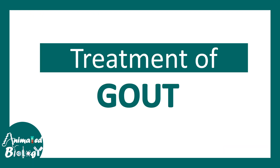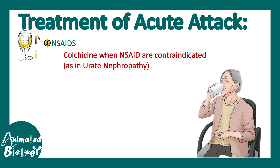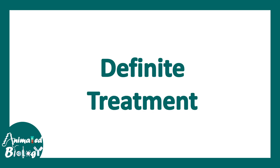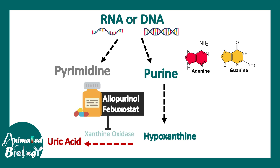For treatment, we must manage both an acute attack and the chronic phase. Acute gout presents with painful, swollen, and inflamed joints, treated with NSAIDs. Colchicine can be used when NSAIDs are contraindicated, such as in uric nephropathy or NSAID allergy. If colchicine is not working, corticosteroids can be used in severe cases. Chronic management involves decreasing uric acid levels using drugs such as allopurinol and febuxostat, which inhibit the xanthine oxidase enzyme.